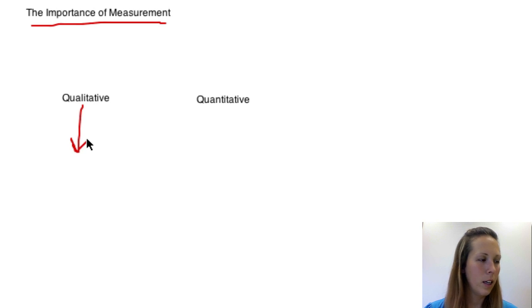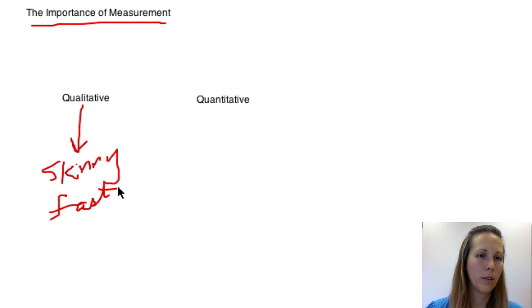A qualitative measurement is going to describe something as skinny or maybe fast. Qualitative is a quality something has like being skinny, fast, tall, thin. It's a descriptive word.